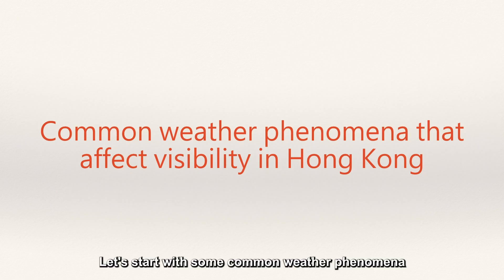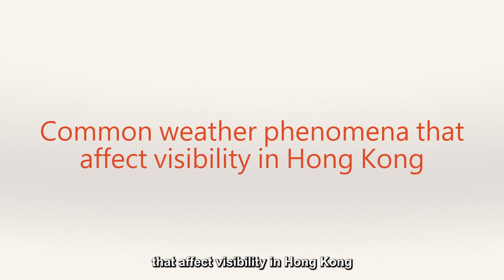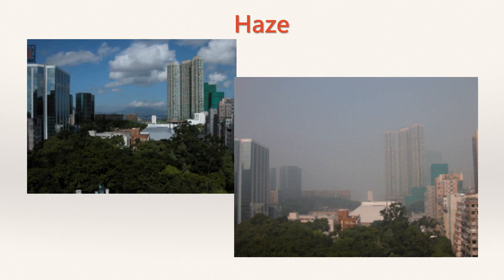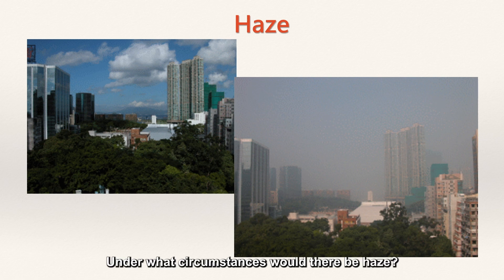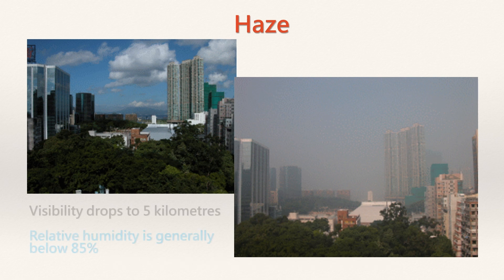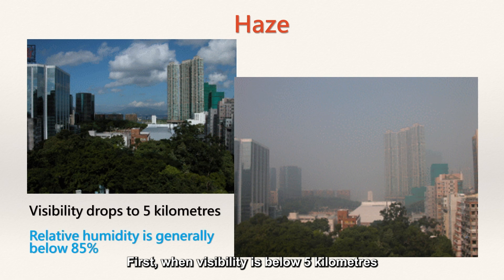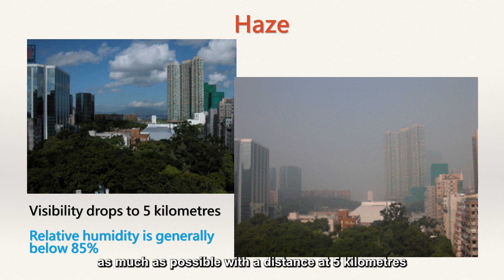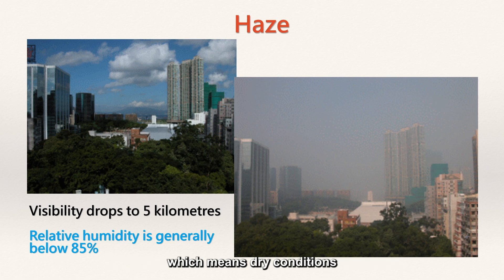Let's start with some common weather phenomena that affect visibility in Hong Kong. First, haze. Under what circumstances would there be haze? First, when visibility is below 5 kilometers — so remember to look at landmarks at a distance of 5 kilometers. Second, relative humidity is generally below 85%, which means dry conditions. Haze will be reported in this situation.